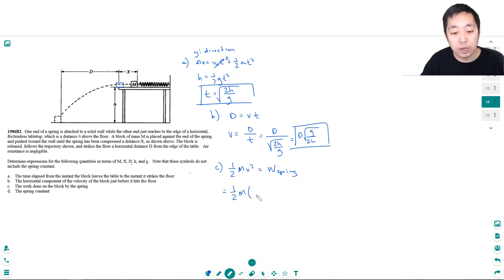v squared is d square root g over 2h squared. So that's one half m d squared g over 2h. That's equal to one fourth m d squared g over h.